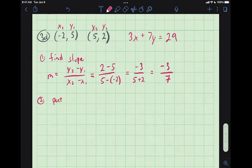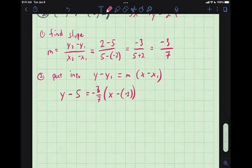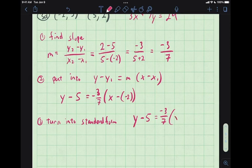Number 2. Put into y minus y1 equals m x minus x1. That's point-slope form. Y take away 5 equals m times x, oops, I know what my slope is. Negative 3 sevenths. x, take away negative 2.